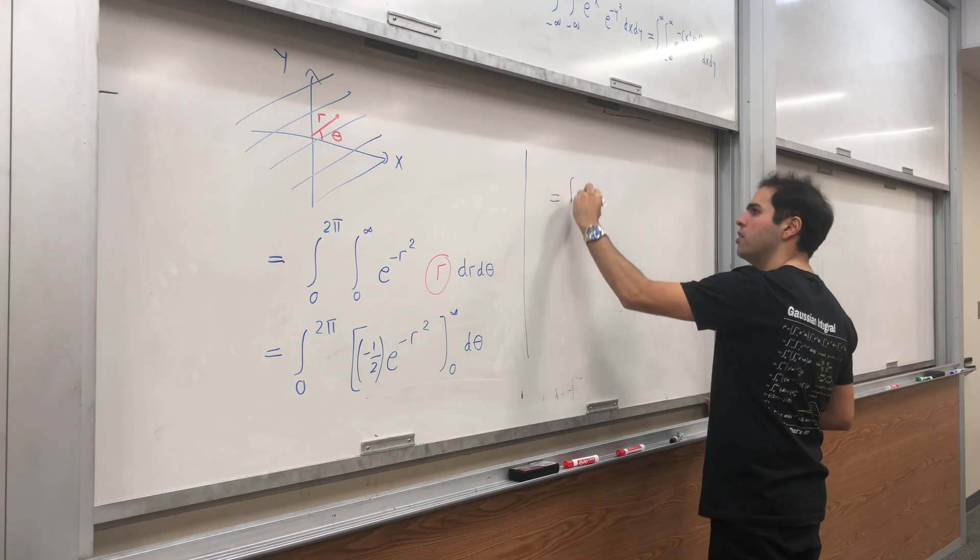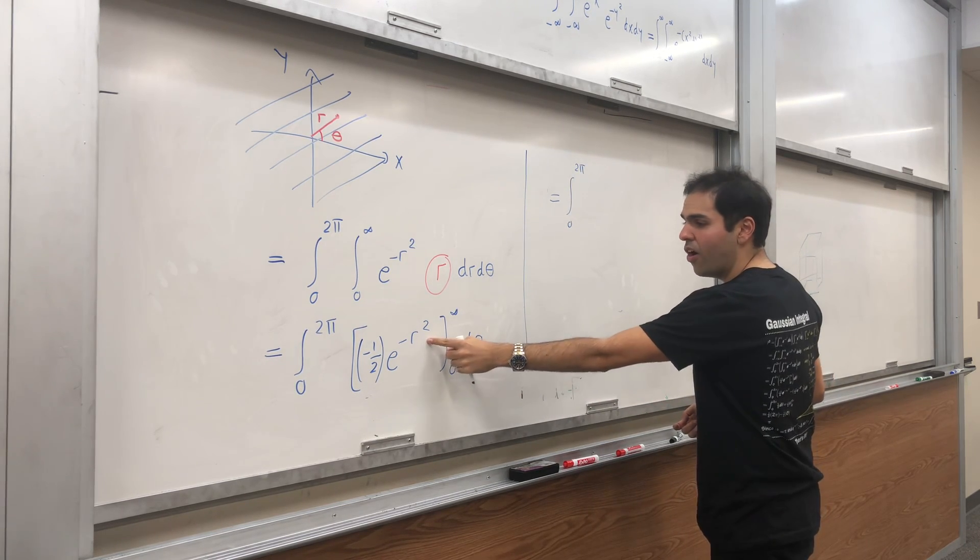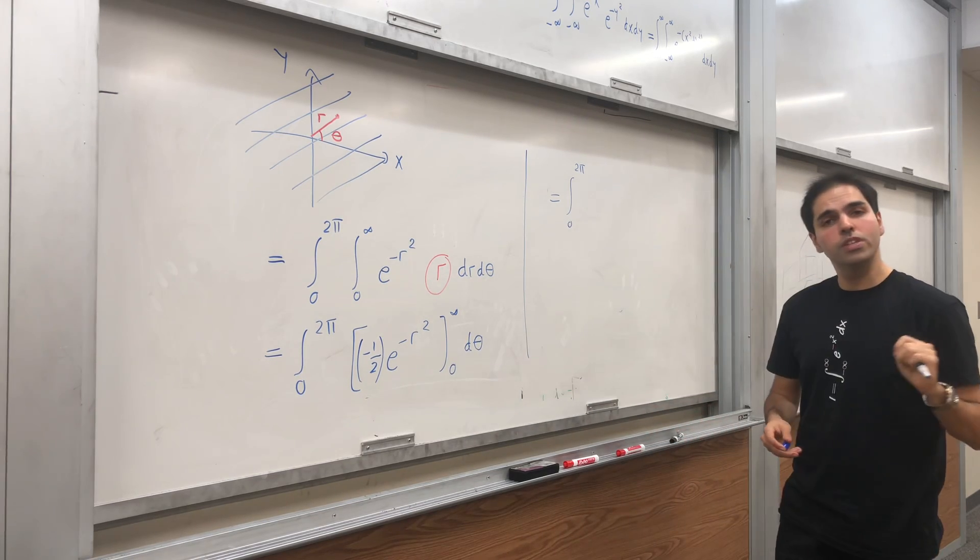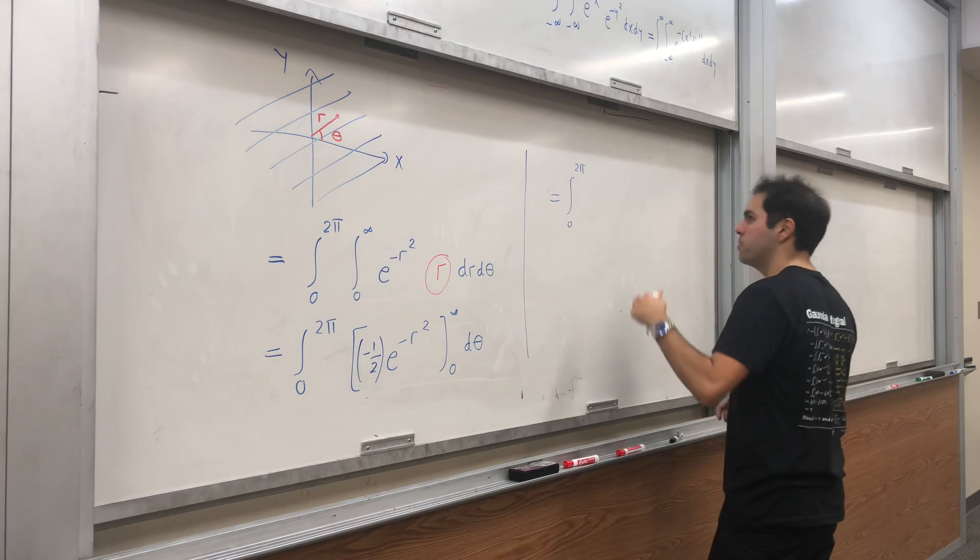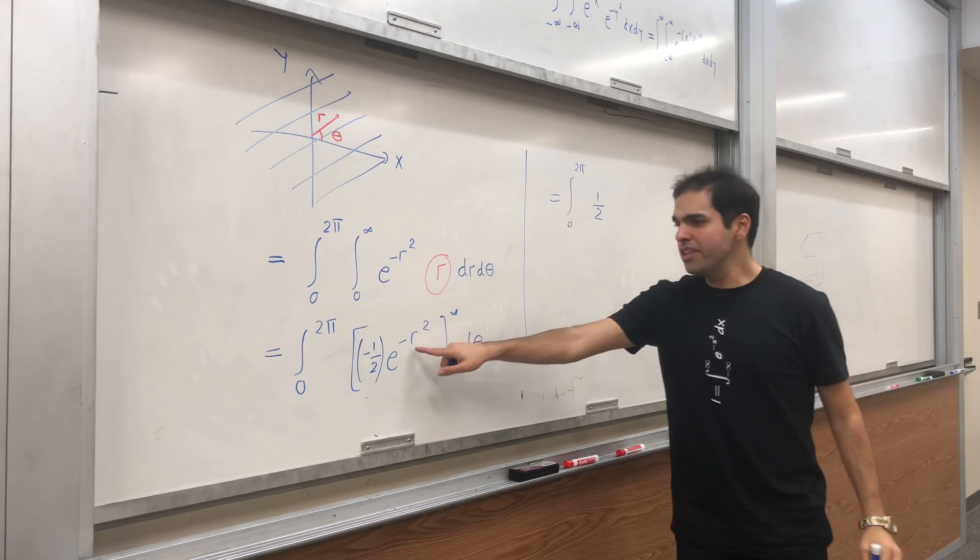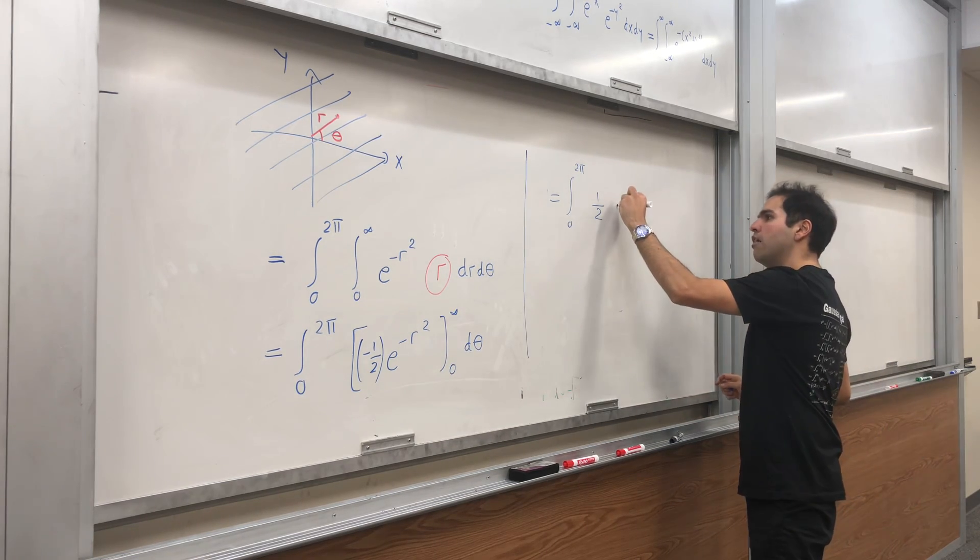And then that just becomes integral from zero to 2π. So as r goes to infinity, we get e^(-∞) which is zero. And then minus minus minus becomes plus. So 1/2·e^0, which is one, so in the end we get 1/2 dθ.